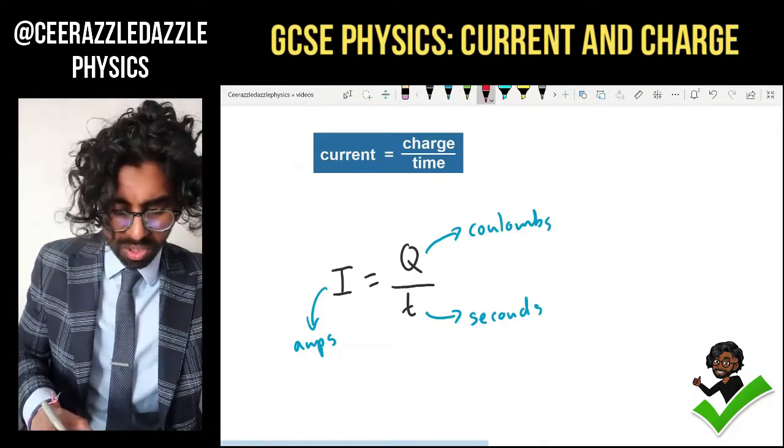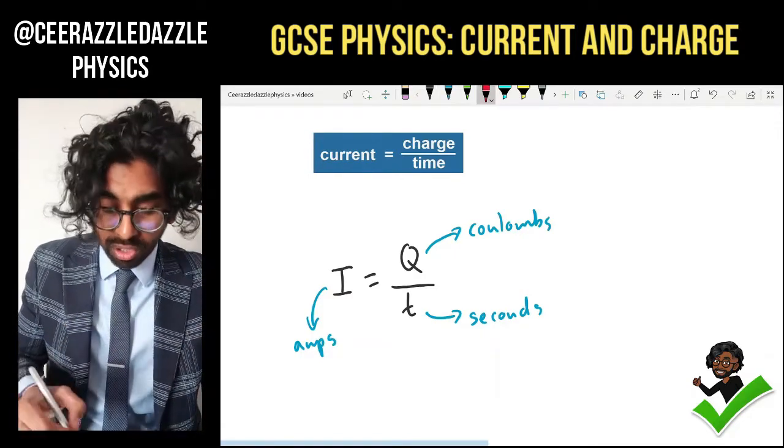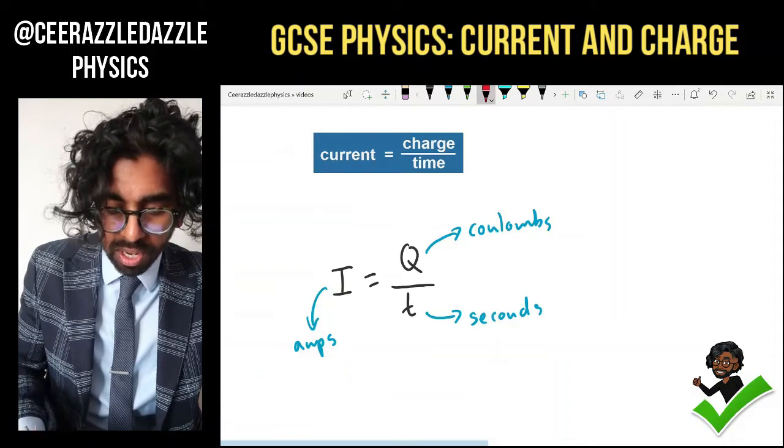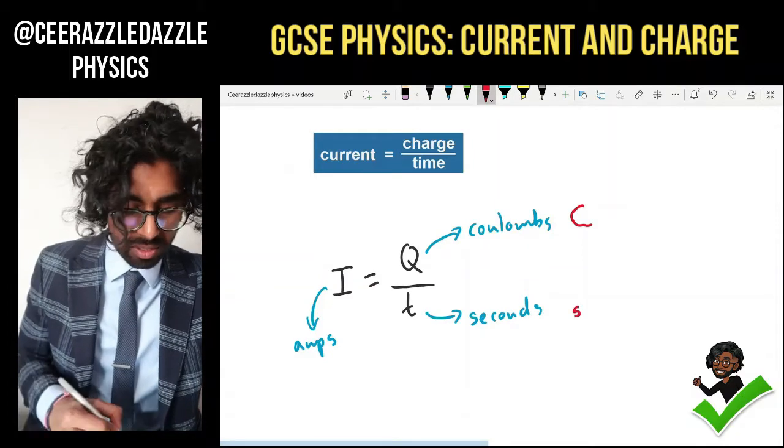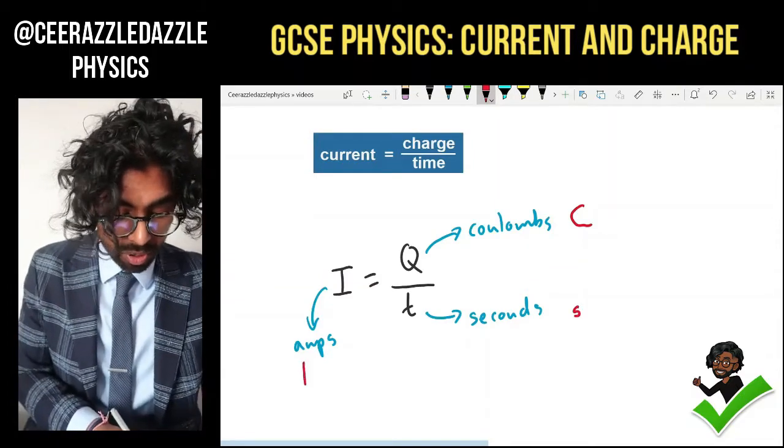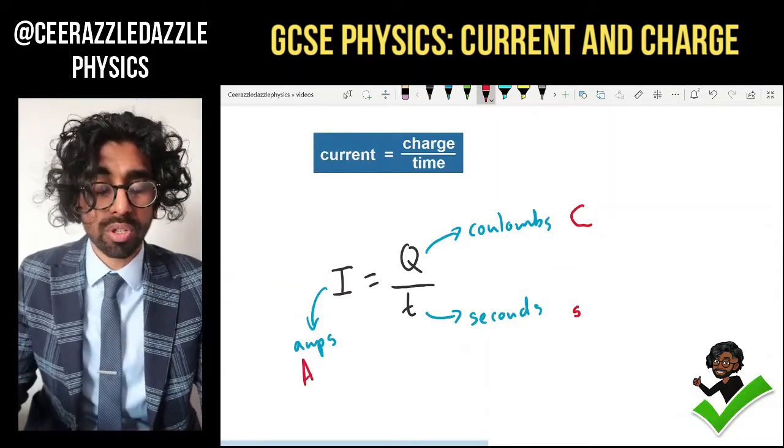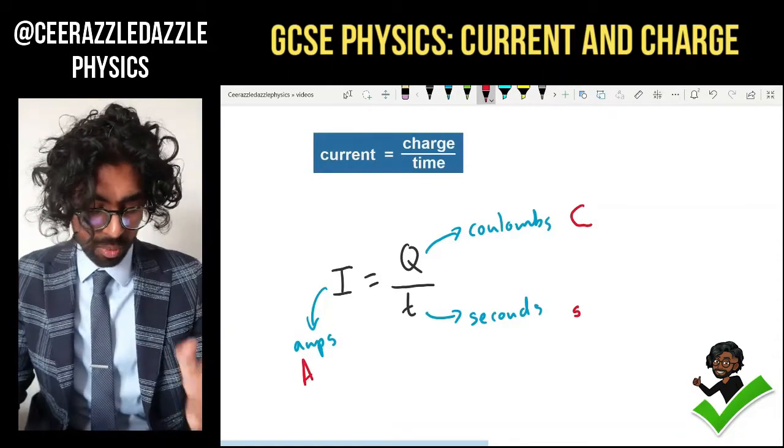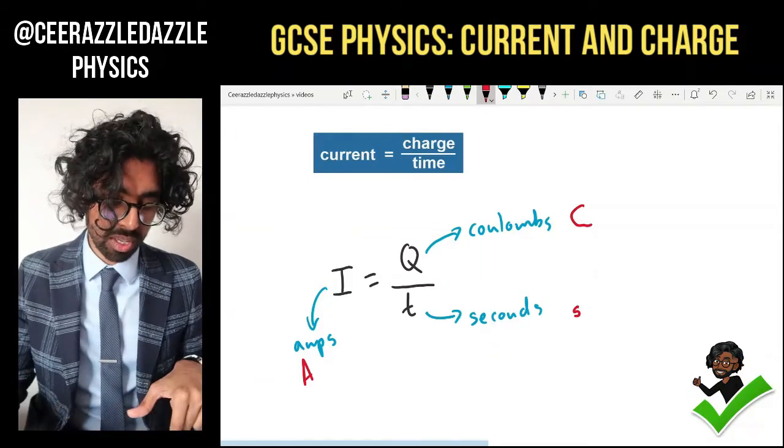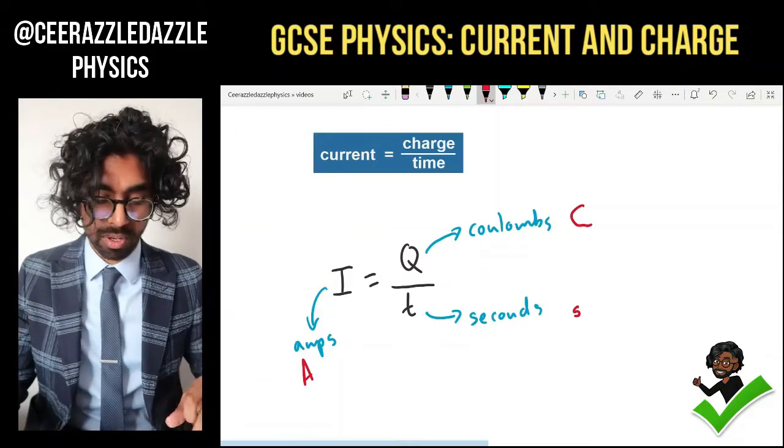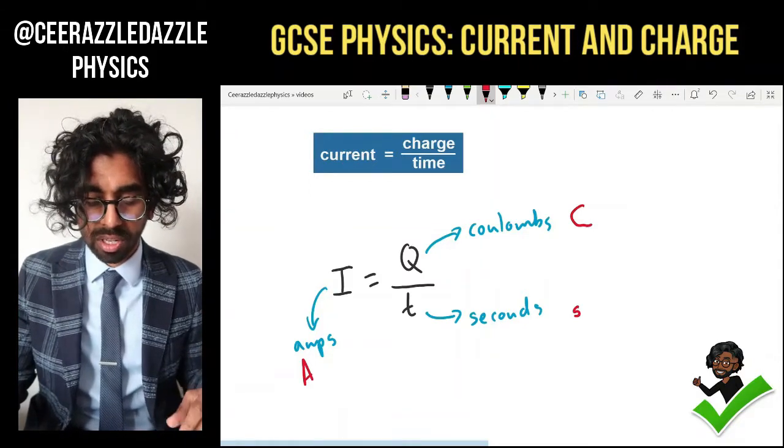You don't have to write down coulombs, seconds, or amps the word, you can actually use symbols. So coulombs is denoted by capital C, seconds denoted by lowercase s, amps capital A. So I is equal to Q divided by t, and we now have the symbols: C for coulombs, s for seconds, capital A for amps. Current is equal to charge divided by time.